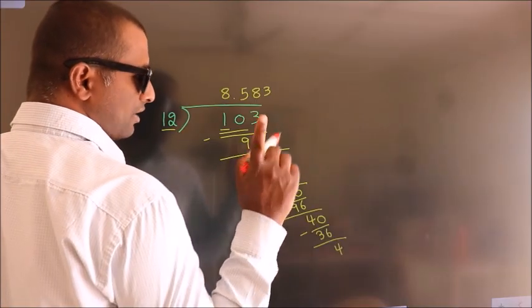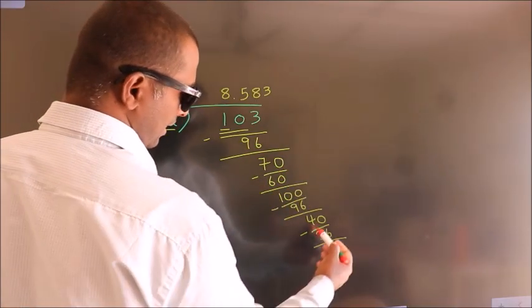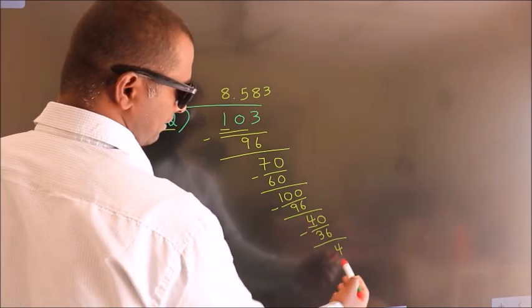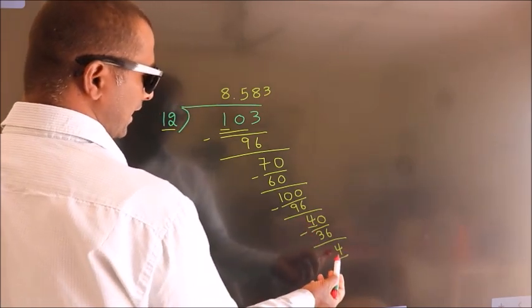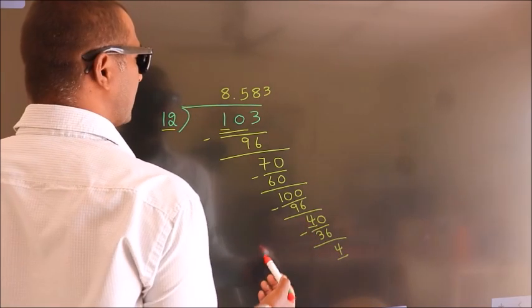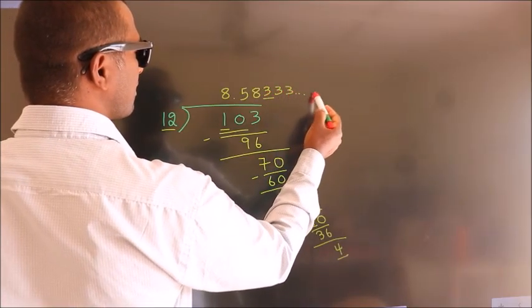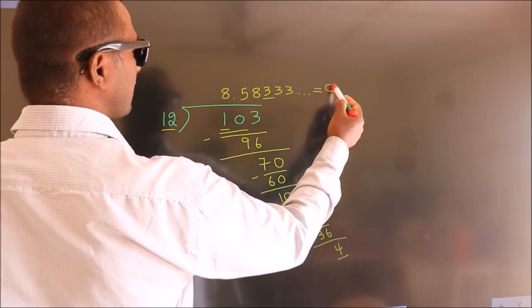Now you observe, here we had 4, and we got 4 again. That means this number will keep on repeating. So this is our quotient.